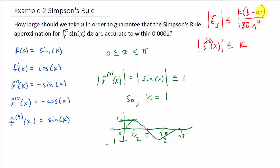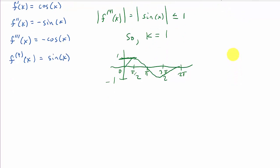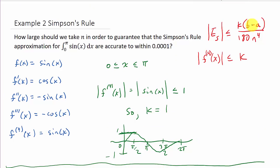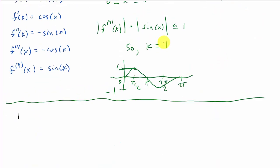Alright, so now we need to plug everything into here. k is one, b is two, a is one. So let's look at this. So I've got... I'm sorry. I don't know why I said one and two on a and b. a is zero, b is π. Okay. I've been doing a bunch of these today, and the limits on some of them have been one and two. I guess I've got that on my mind. Alright, so we've got (b - a)^5 over 180n^4.